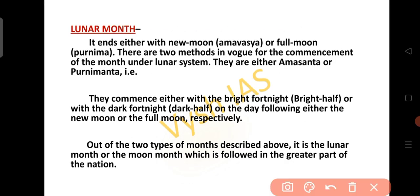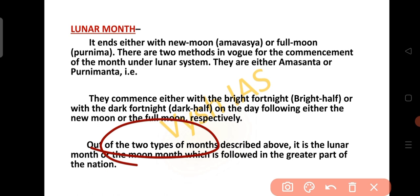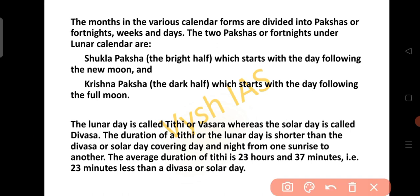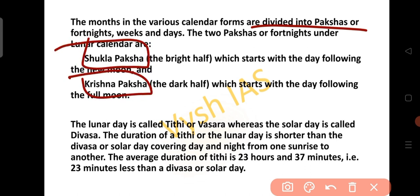The lunar month is followed in the greater part of India. The months in various calendar forms are divided into Pakshas or fortnights, weeks and days. Two Pakshas under the lunar calendar are Shukla Paksha and Krishna Paksha. Shukla Paksha is the bright half, which starts with the day following the new moon, and Krishna Paksha is the dark half, which starts with the day following the full moon.